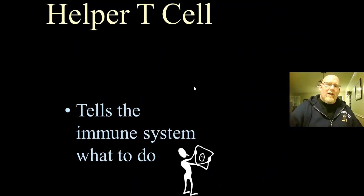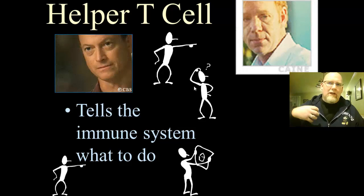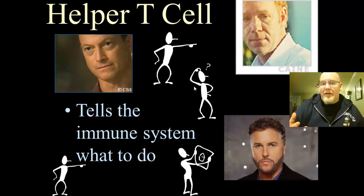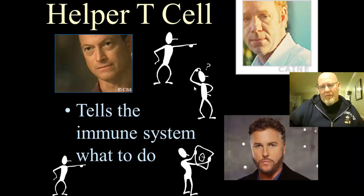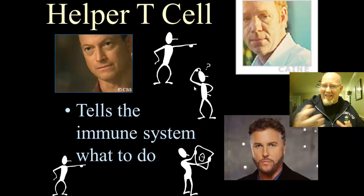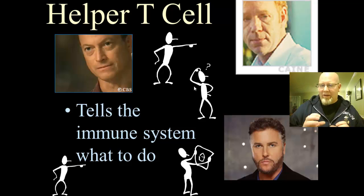The helper T cell is the coordinator, the captain, the leader. It makes all the decisions and coordinates the rest of the immune system. The macrophage reports to the helper T cell, which then tells other white blood cells how to react to a particular germ or infection. The helper T cell is the main player, the leader of the pack.